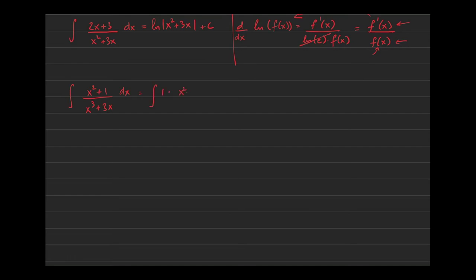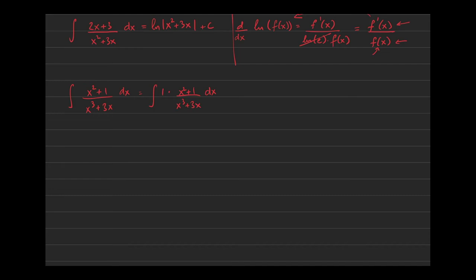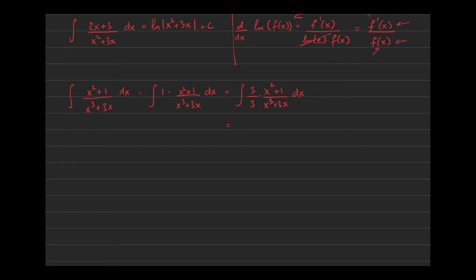So I can write 1 times (x² + 1) over (x³ + 3x) dx — these two are the same integrand. We're not changing anything by multiplying by 1. Now I can change that 1 into 3 over 3, since we need a 3 in the numerator. Then I keep the 3 in the numerator on the inside and take the 1/3 out using the scalar multiple property.